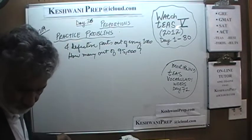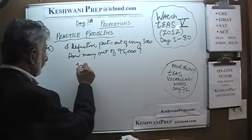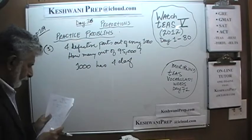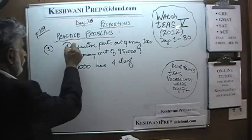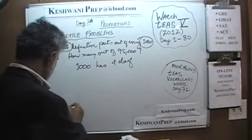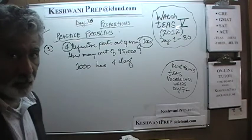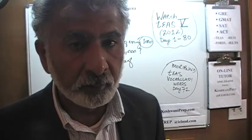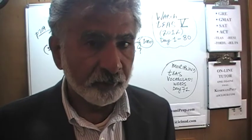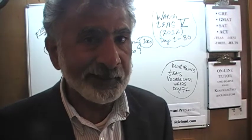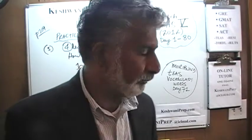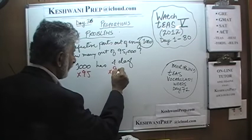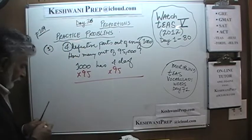So let's see. Again, the same thing. We know that 1000 has 4 defective because they tell us — it says there are 4 defective out of every 1000. We are not interested in how many defectives we can expect out of 1000. We want to find out how many defective televisions we can expect out of a batch of 95,000. Just multiply both sides by 95 and we will have our answer.